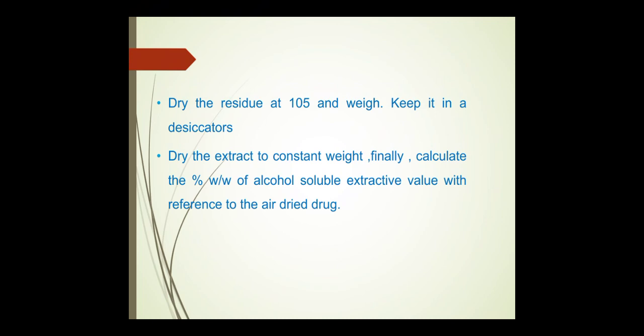Optical rotation: certain substances have the property of rotating the plane of polarized light in the pure state or in solution — they are described as optically active, and this property is known as optical rotation. Optical rotation is determined at 25°C using a sodium lamp as the source of light. Examples: castor oil, +3.5° to +6°; honey, +3° to −15°.